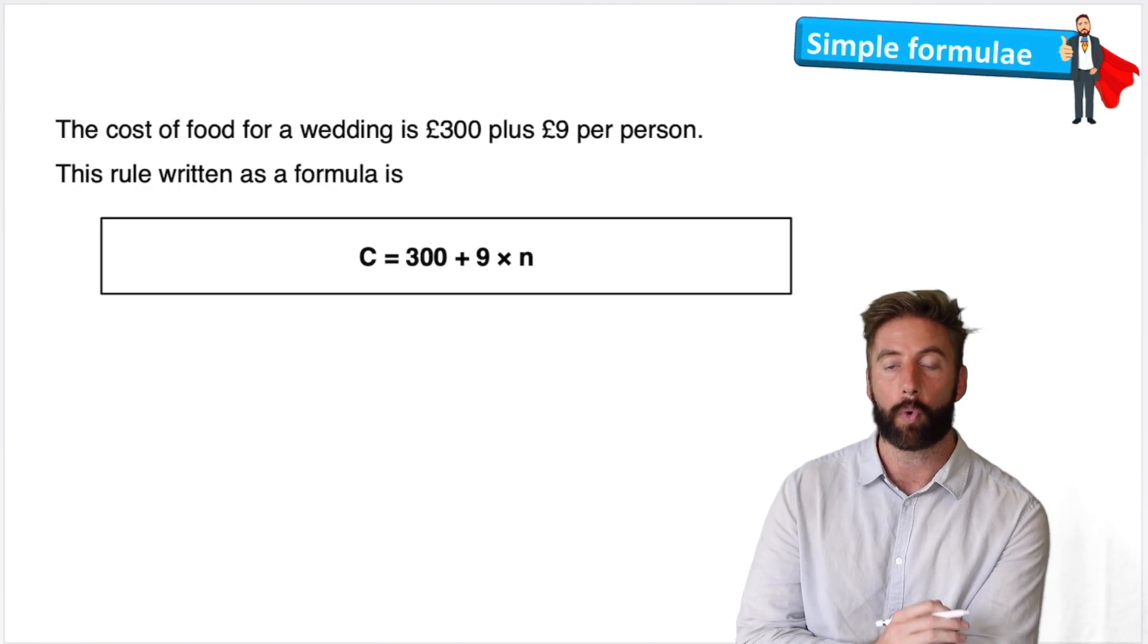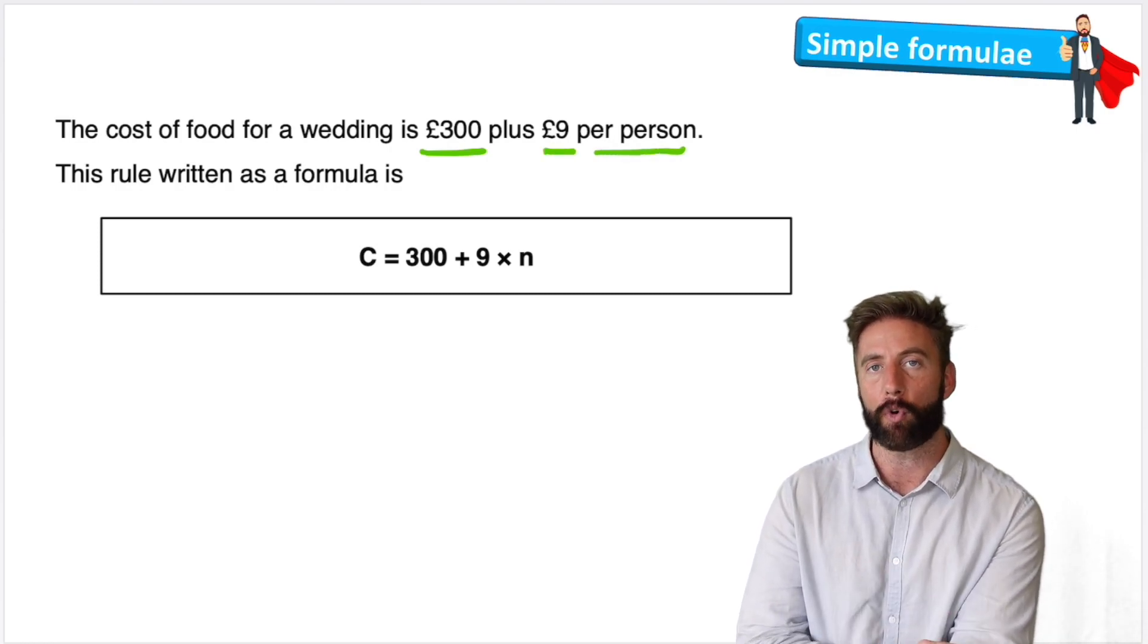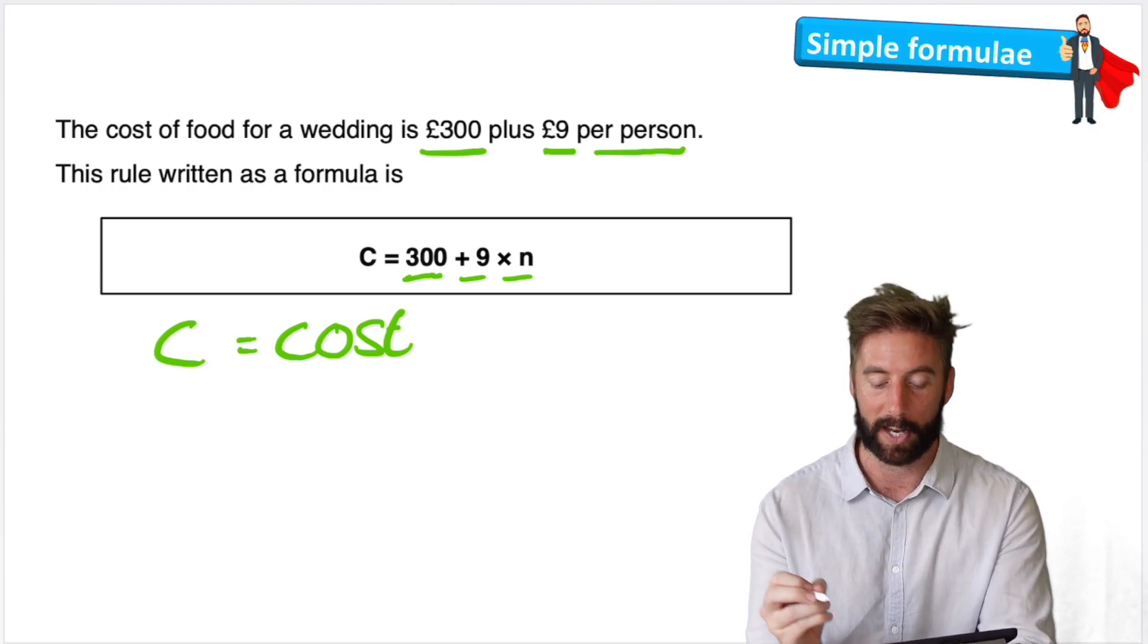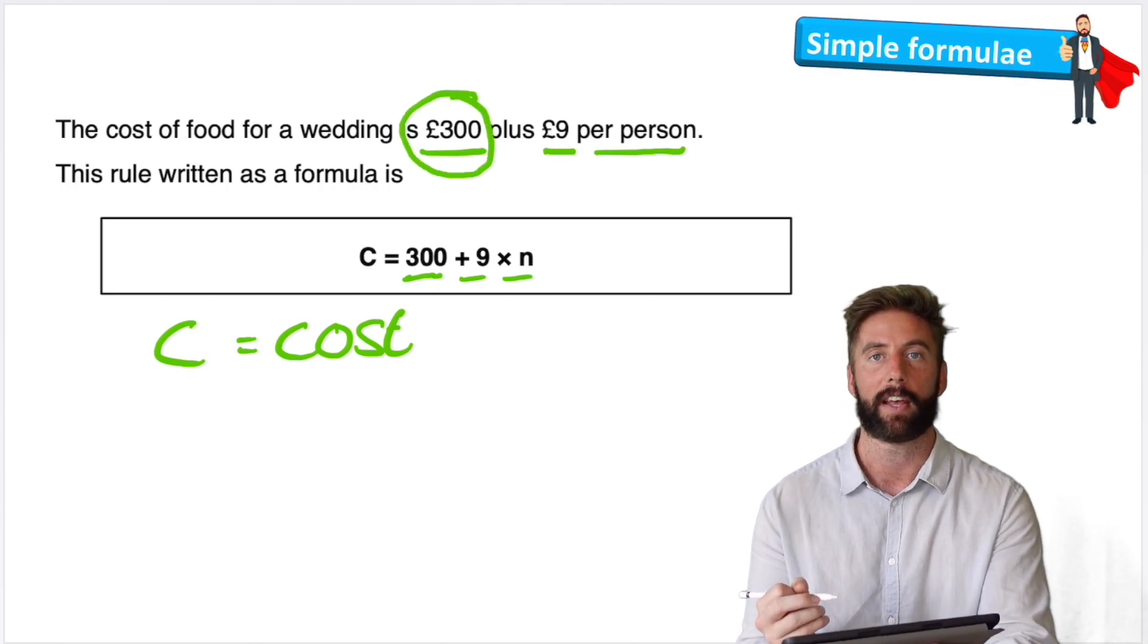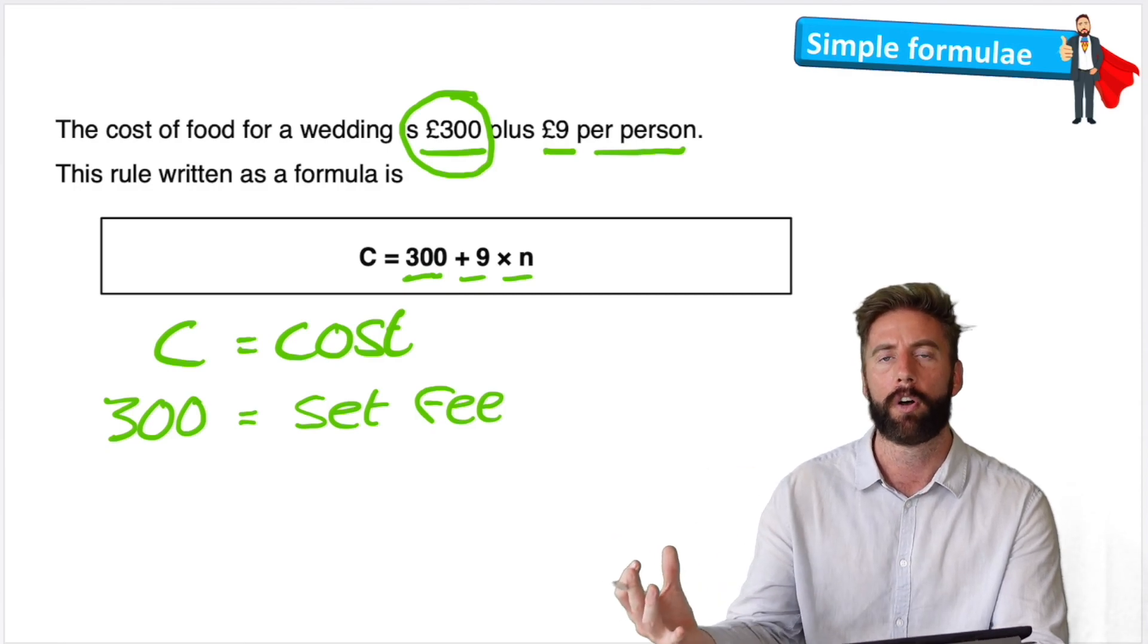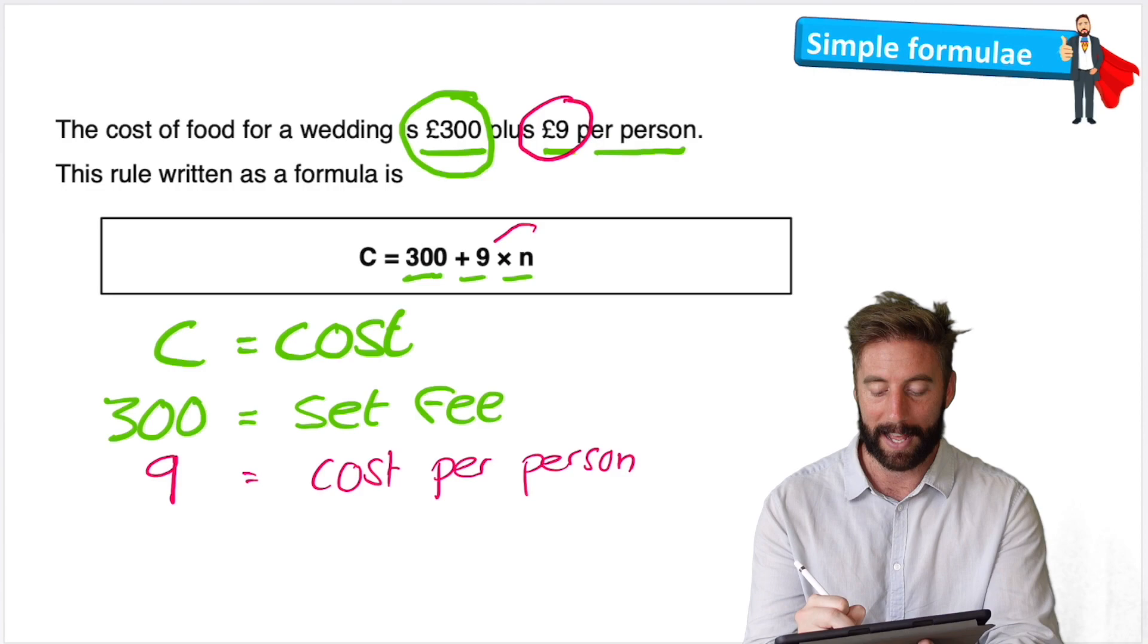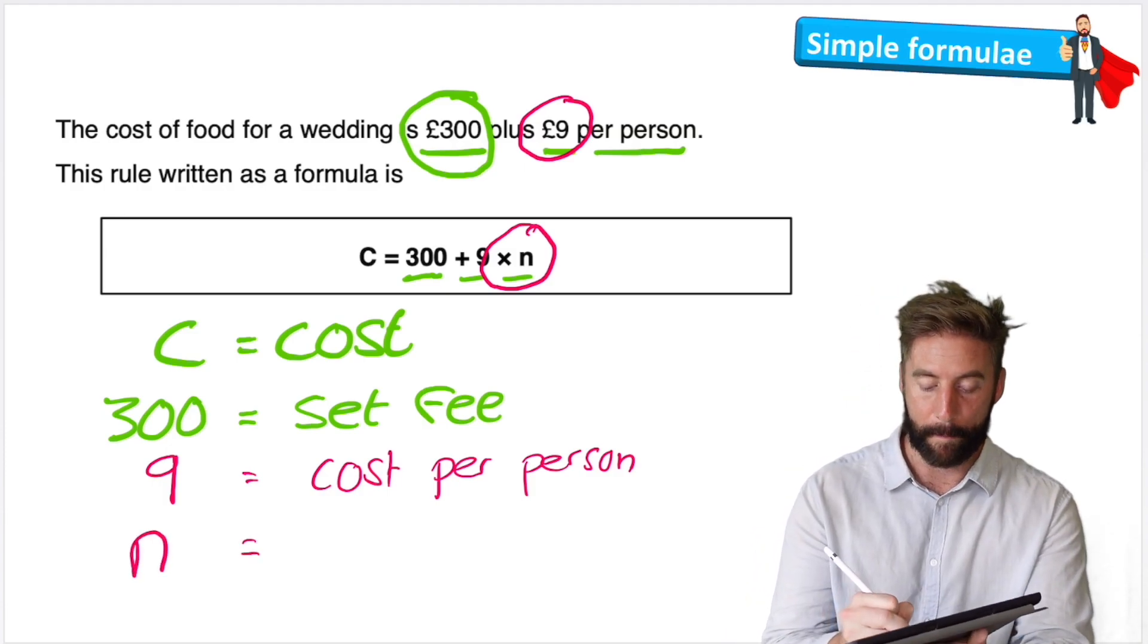Let's see how else formulas can be used. The cost of food for a wedding is £300 plus £9 per person. This rule can be written as a formula. And the formula would be C, and in this case C will stand for cost, equals 300 plus 9 times N. Let's break down our formula here and just make sure we understand every element of it. So the C at the start is the cost. And the cost is equal to 300 because the 300 is a set fee, a fee for just having a wedding. And then we have to pay per person that's going to come to our wedding, which makes sense. The cost per person is £9. So the 9 is the cost per person. But then we have this times N. What do we think the times N means? That's right, the number of people that come. So N equals the amount of people.